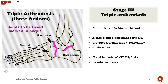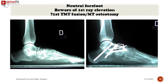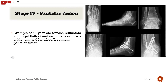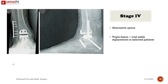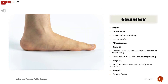For stage 3, triple arthrodesis is indicated in cases of fixed deformities and degenerative joint disease. It provides a plantigrade and reasonably painless foot. Neutral forefoot must be ensured; beware of first ray elevation — first tarsometatarsal fusion or metatarsal osteotomy may be needed. For stage 4, pantalofusion is the treatment, as illustrated by a 68-year-old female with rheumatoid arthritis with rigid flat foot and secondary arthritis of the ankle joint and hindfoot.